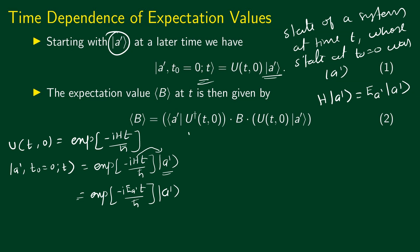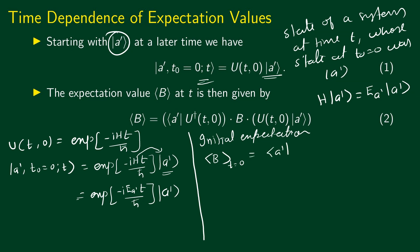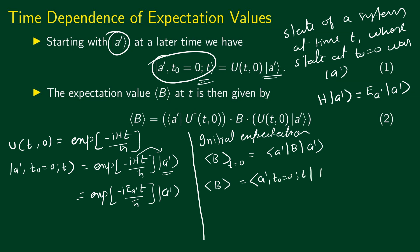Now let us talk about the expectation value. The expectation value of operator B at time t equal to 0 is simply bra A-prime operator B ket A-prime, given that the states are normalized to 1. The expectation value at any later time t is given by bra A-prime, t0=0, time t, operator B, ket A-prime, t0=0, time t. This is simply the definition for expectation value.